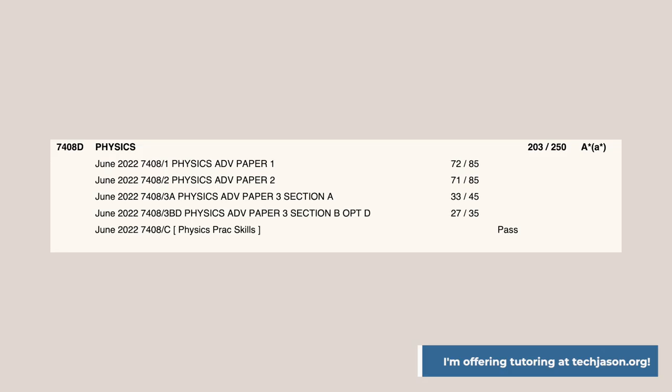This video will go through all the required formulas for the AQA physics course for A-level. My name is Jason and I just graduated from secondary school, having achieved A-star with a converted UMS score of 95% for my A-level physics.